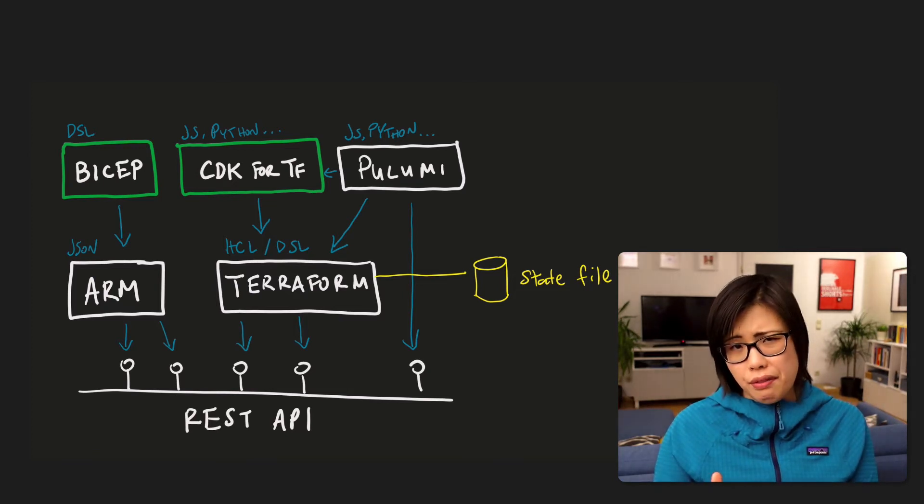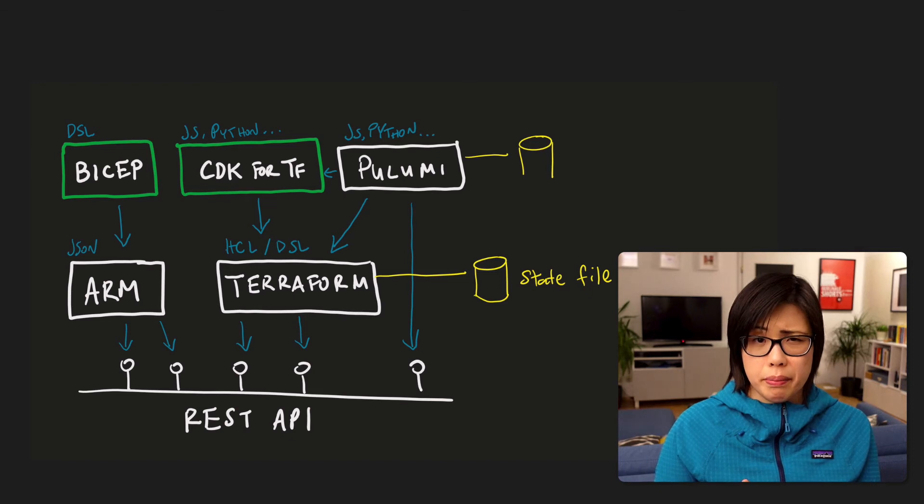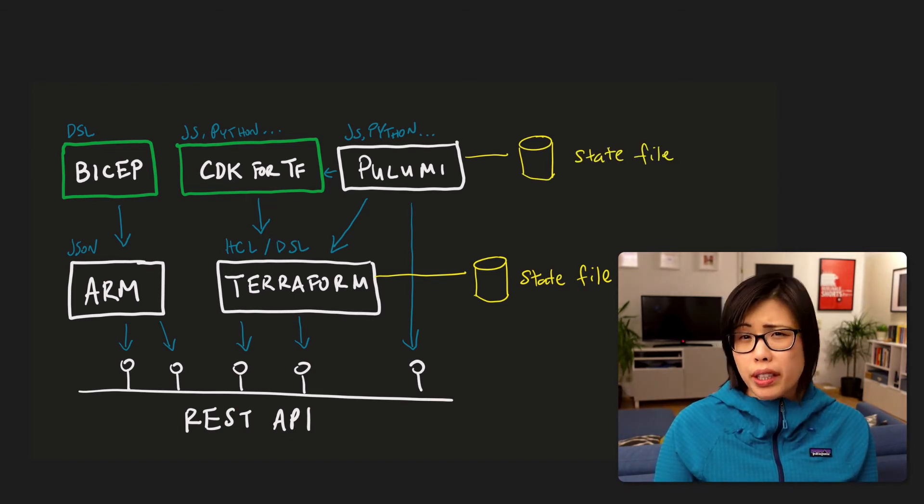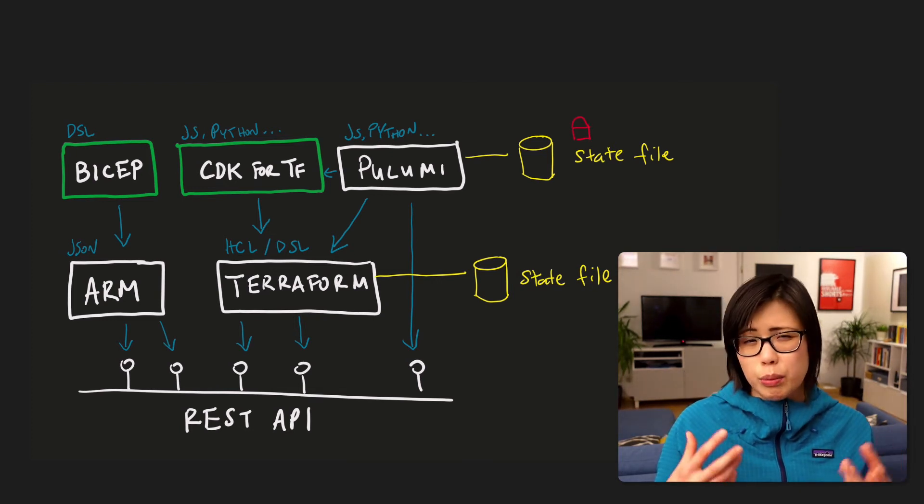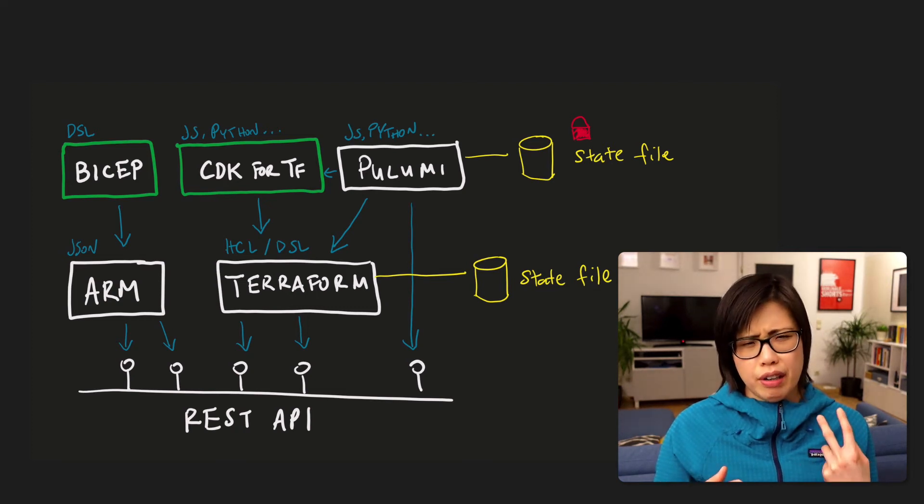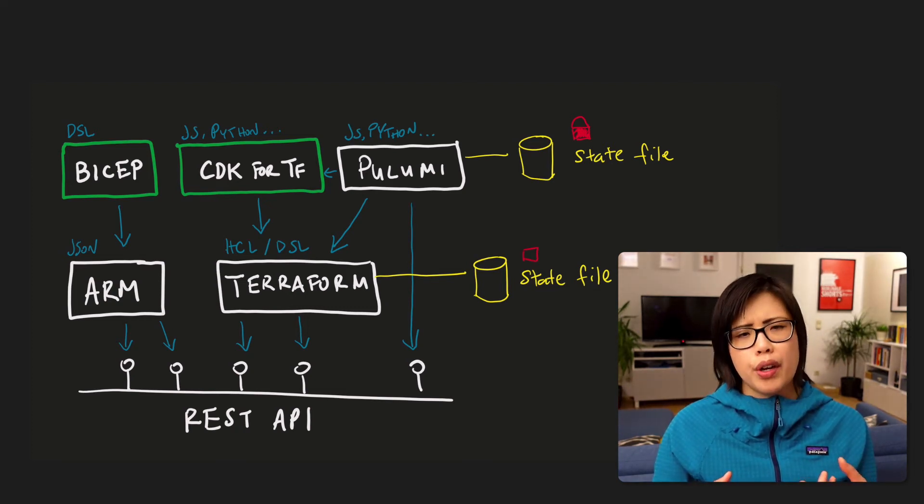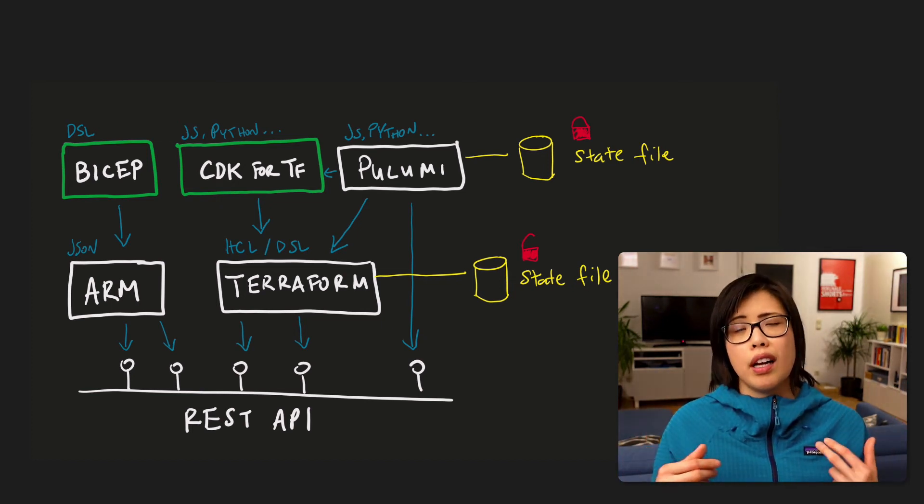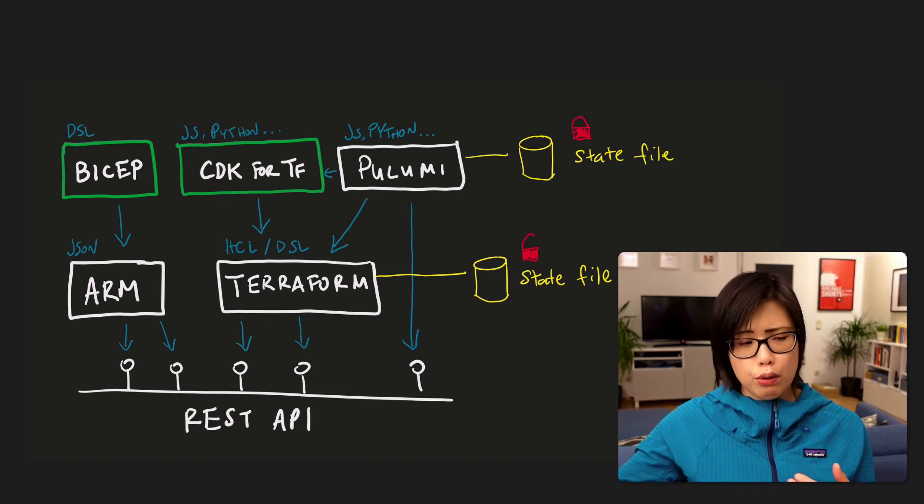So Pulumi also has a state file and their state file is encrypted. So people see that as kind of an added advantage. Do some Googling about the differences between Terraform and Pulumi. I did it a little bit briefly. And then people definitely said, I think I read on Reddit or Stack Overflow, that Terraform state files are much more easy to repair than Pulumi. I know Terraform, you can import resources. I actually don't know if Pulumi can do that or if it can only create resources. But that's, I think, one major advantage for Pulumi over Terraform.